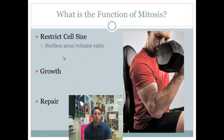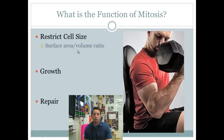Regarding the functionality of mitosis: first, it's important to restrict cell size. You don't want cells to get too big, because you want to maintain a manageable surface area to volume ratio. As a cell grows, surface area involves two factors multiplied together — length and width — while volume is a cubic calculation. So as a cell grows, volume increases exponentially faster than surface area, quickly becoming unmanageable. Cells need to stay small to transport nutrients easily and efficiently.